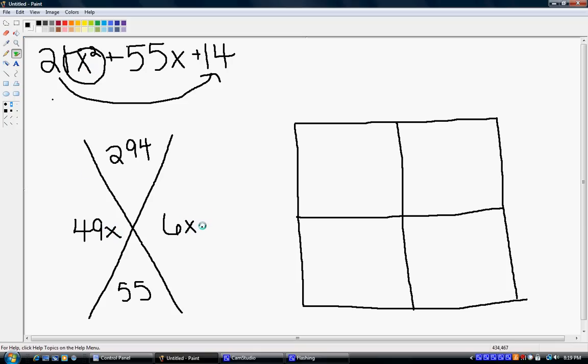Now, we have to bring all this stuff over to the box. So we begin by putting 21x squared in this box, the first term, and the last term in this box over here. And then we transfer this information over here, so 49x and 6x.